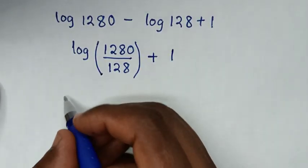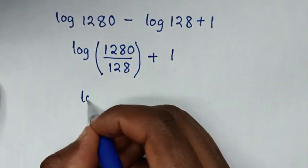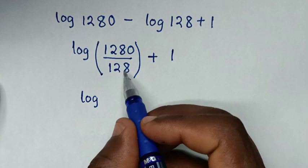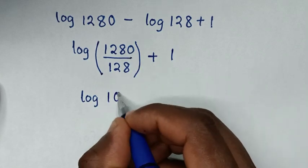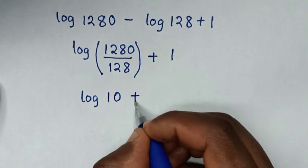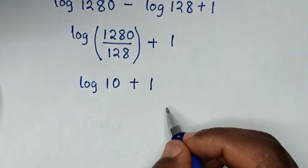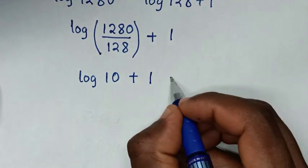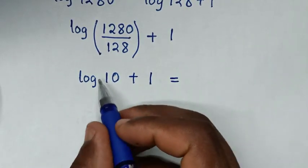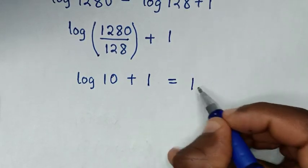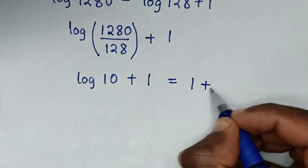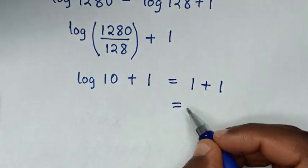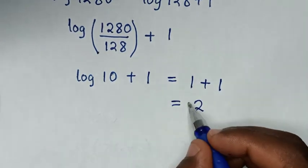Then in the next step, 1280 over 128 equals 10, so it will be log of 10, then plus 1. Log of 10 equals 1, so it will be 1 plus 1, which is equal to 2. So that is our final answer.